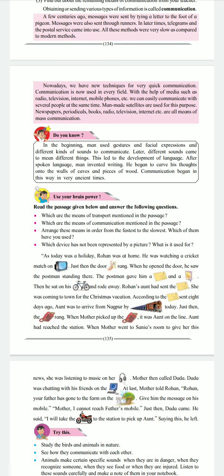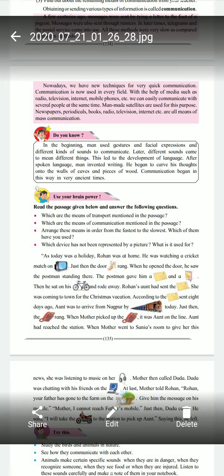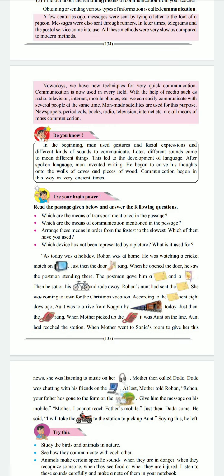Use your brain power. Read the passage given below and answer the following questions. Which are the means of communication mentioned in the passage? Arrange these means in order from the fastest to the slowest. Which of them have you used? Which device has not been represented by a picture? What is it used for?